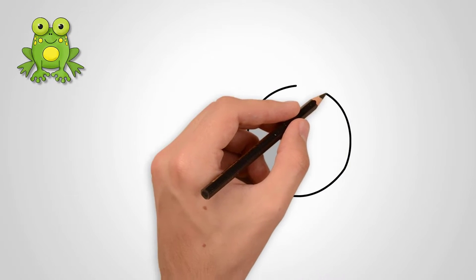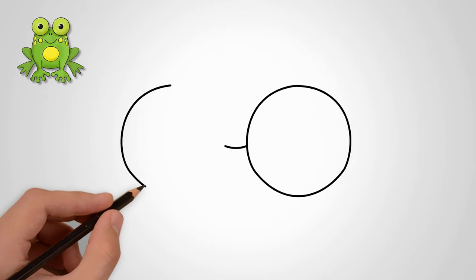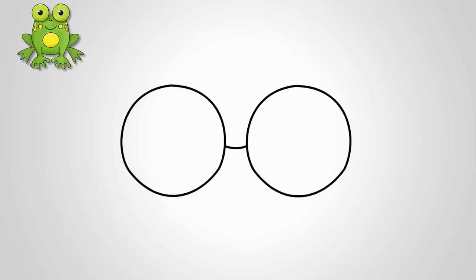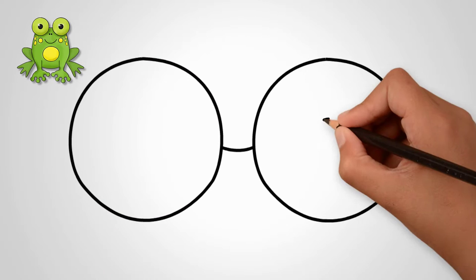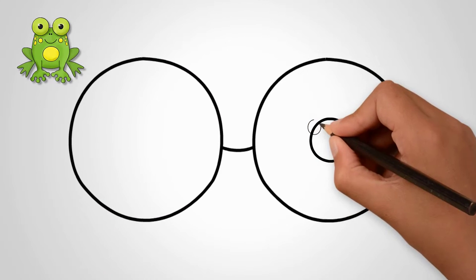How to draw a frog? Draw a frog. Draw two large circles. These will be the eyes of a frog. Frogs have big eyes. Let's draw eyes.